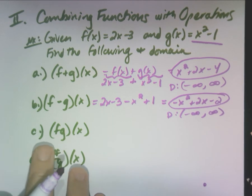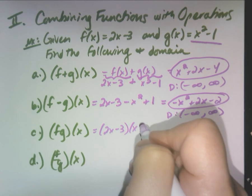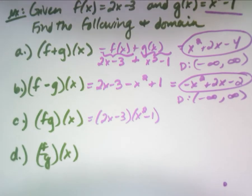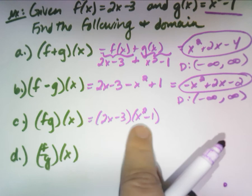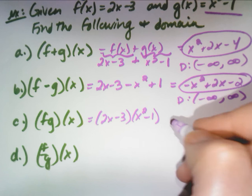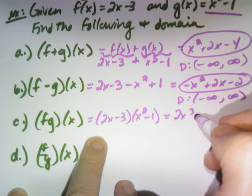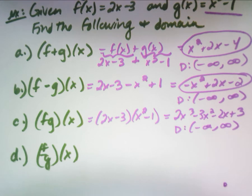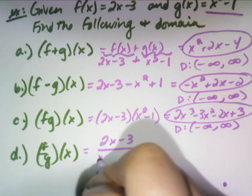For (f · g)(x), you need to FOIL. They might give you square roots or fractions — you need to know how to handle those. But this one is easy to FOIL: (2x − 3)(x² − 1) = 2x³ − 3x² − 2x + 3. Domain is all reals since it's a polynomial.